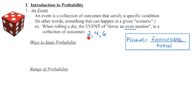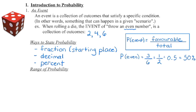An event is the collection of outcomes that satisfy the particular condition that we are given. When calculating probability, we begin by writing it as a fraction, then convert that fraction into either a decimal or a percentage. The probability of rolling an even number on a regular six-sided die is 3 out of 6, which reduces to 1/2. 1 divided by 2 is 0.5 as a decimal, and multiplying by 100 gives us a 50% chance of rolling an even number.